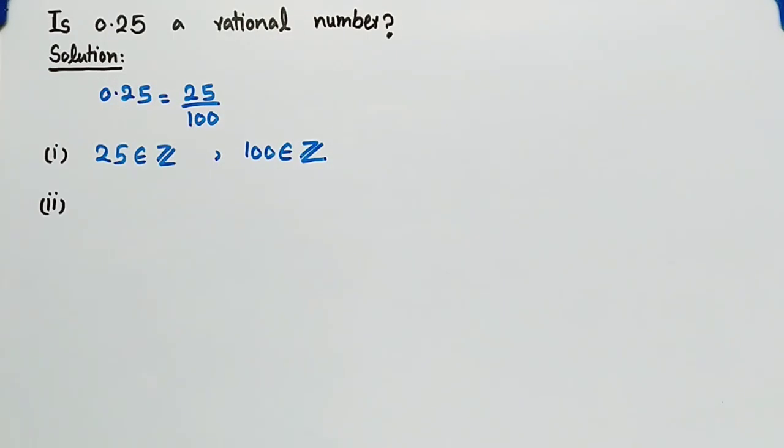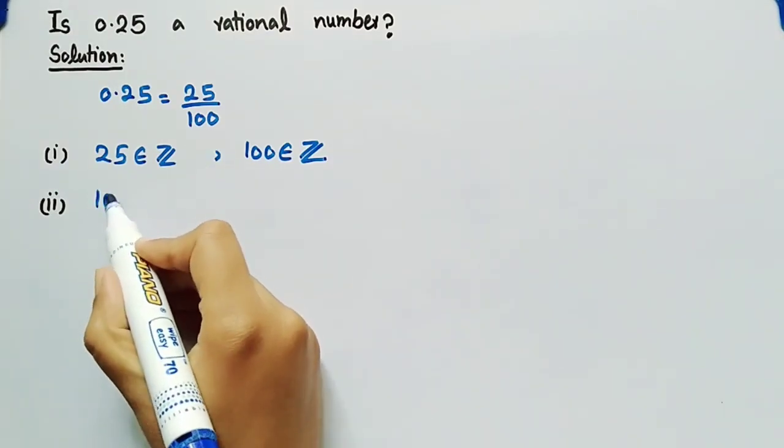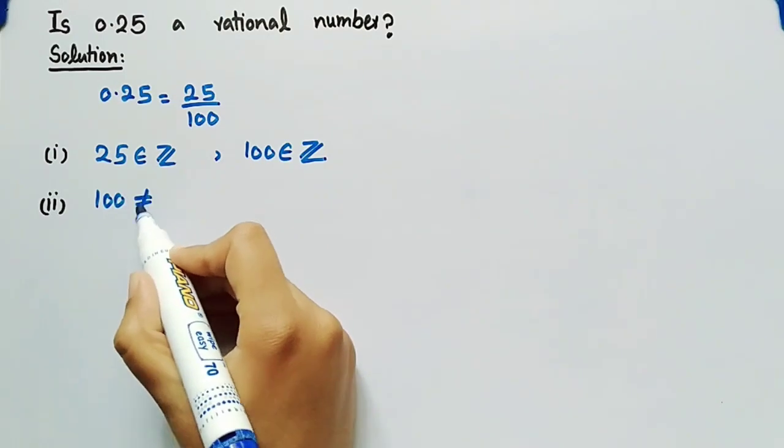The second condition is that the denominator must not be equal to 0. Here, the denominator is 100, which is definitely not equal to 0.